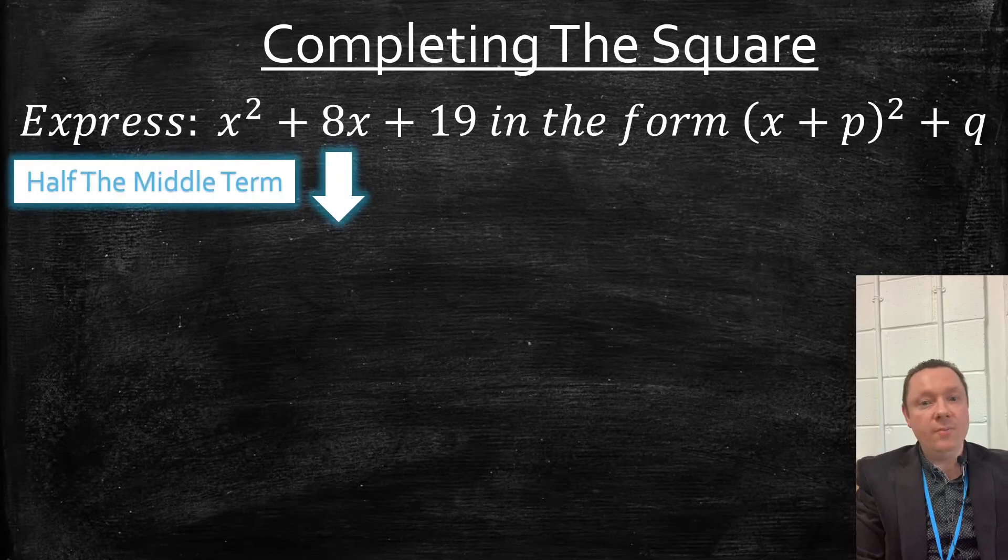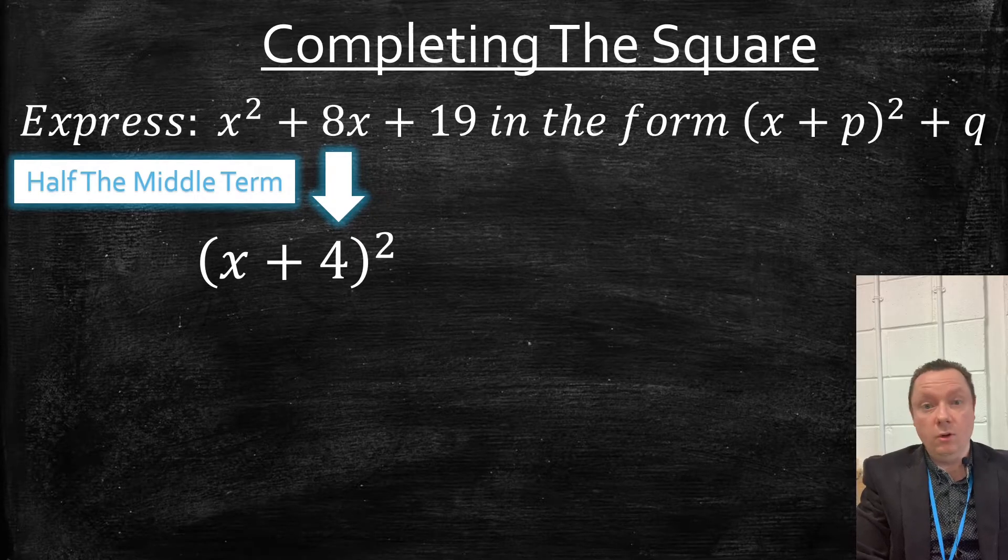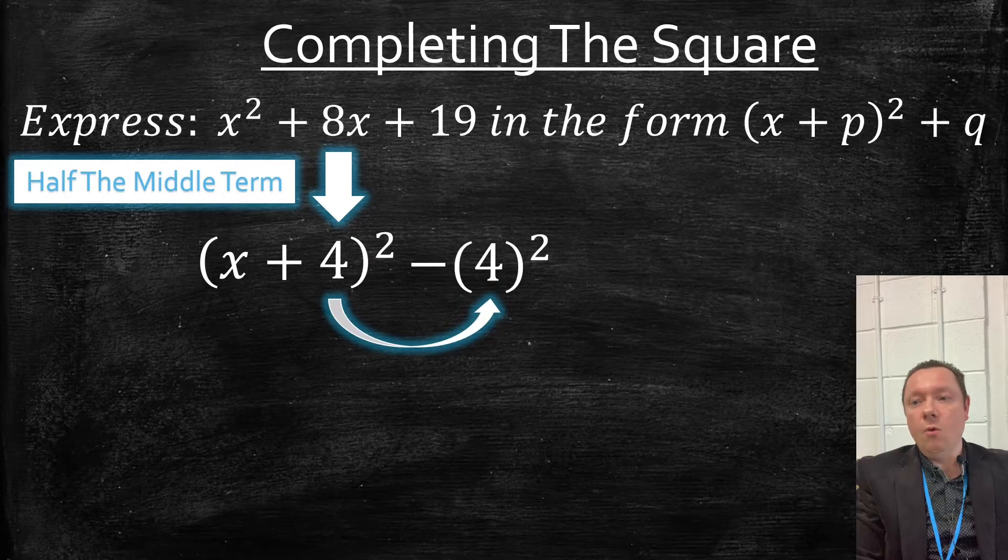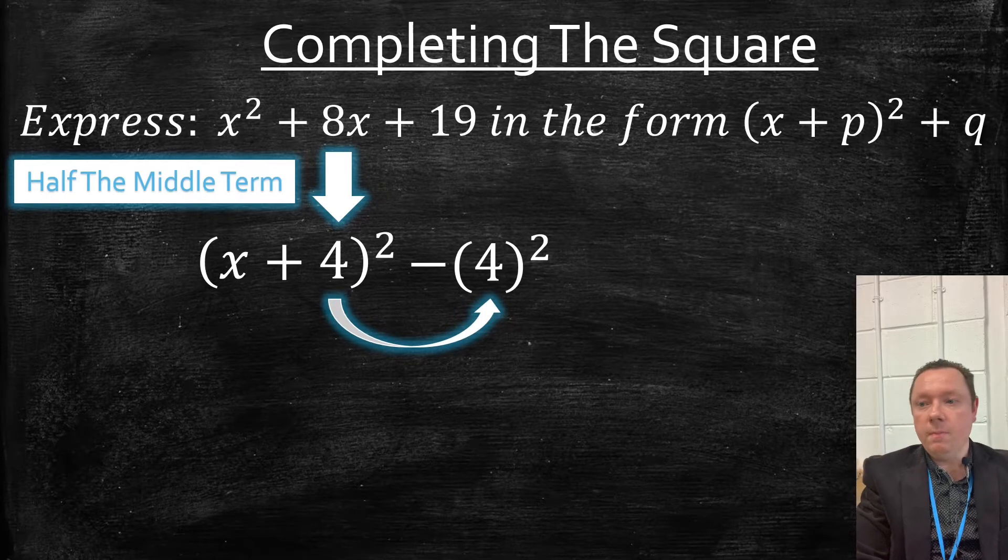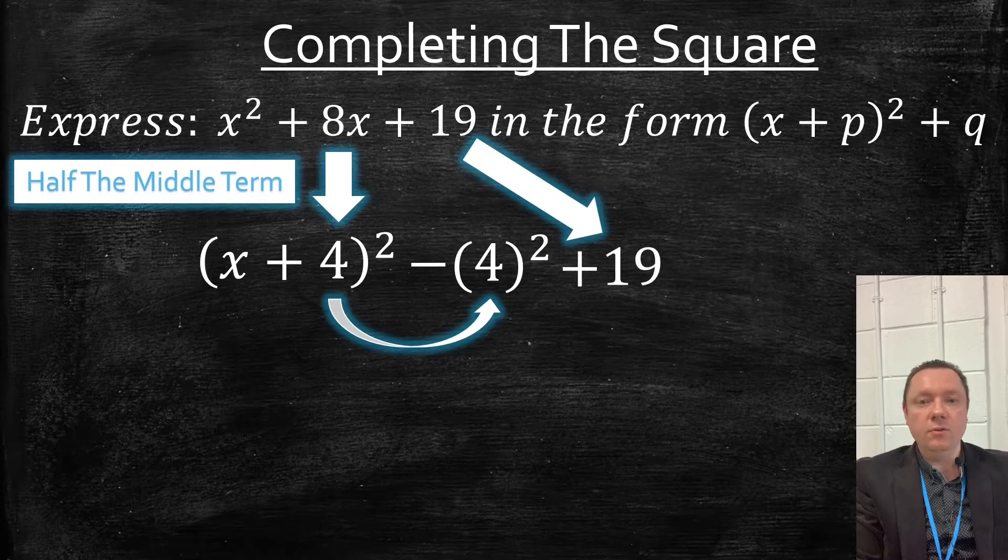We have the middle term to start with, and that goes inside the brackets: (x + 4)². We've now got our first number. Immediately take away 4 squared. We just square that number that we've just found out, and we've still got plus 19 that goes on the end. Don't forget that.